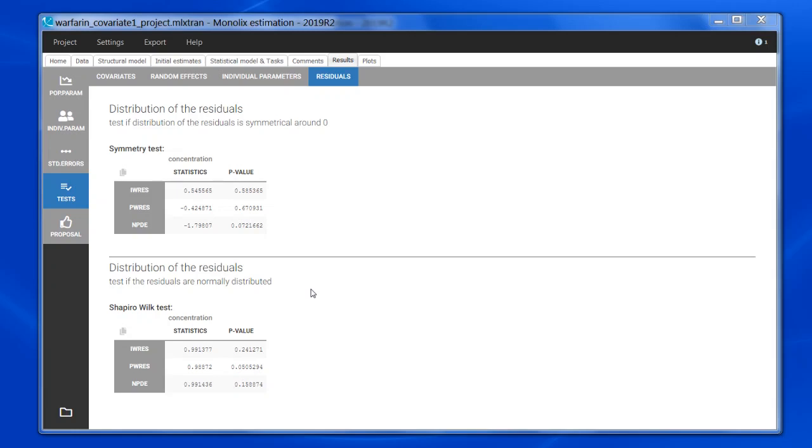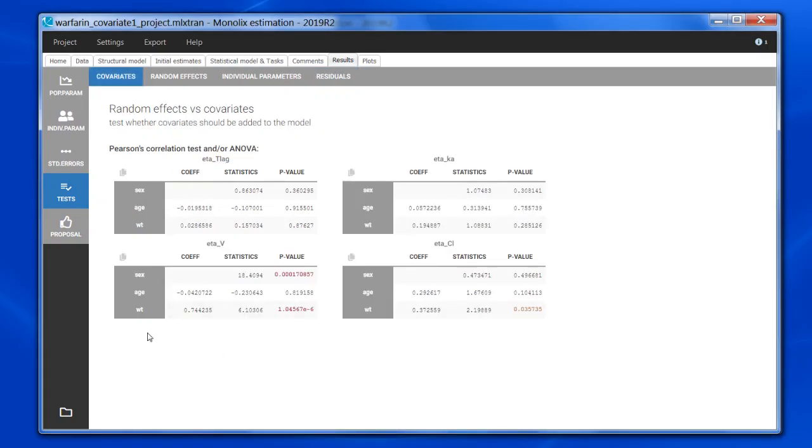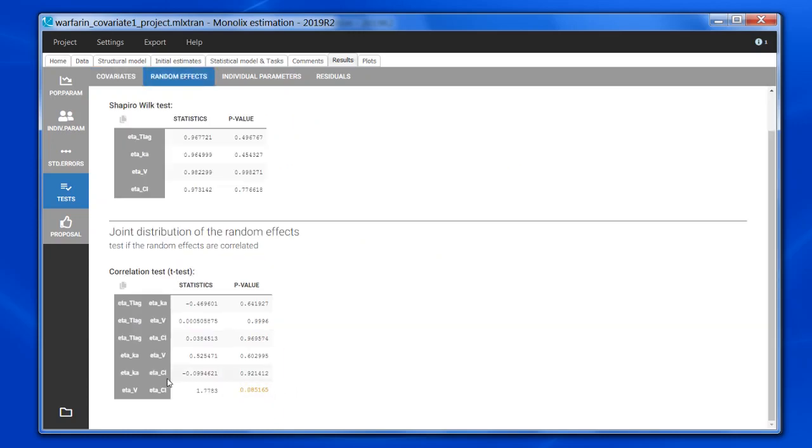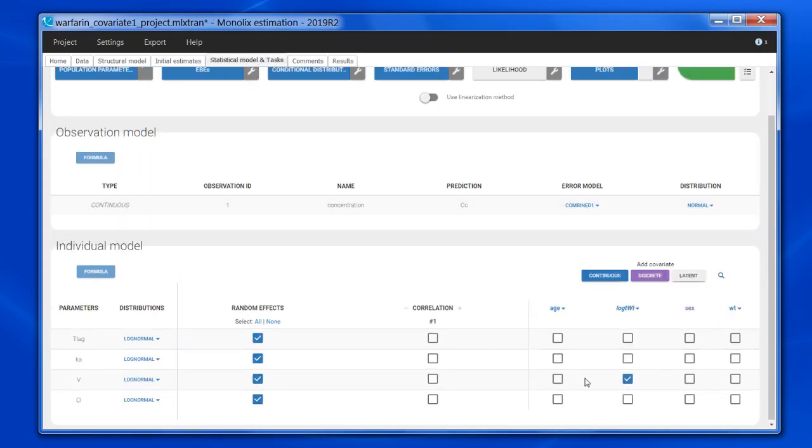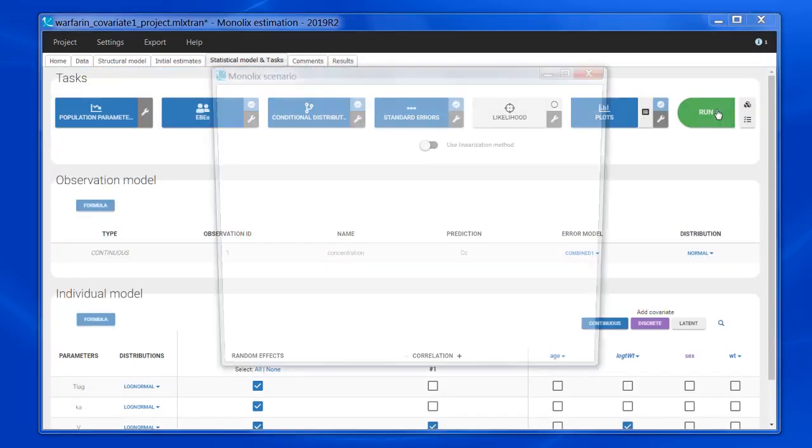Now let's see what changes when covariates and correlations are added to the model. According to the p-values, I will add weight on the volume and add a correlation between V and Cl. I go back to the statistical model term, first log transform weight, add it on the volume, and add a correlation between volume and the clearance, and run again.